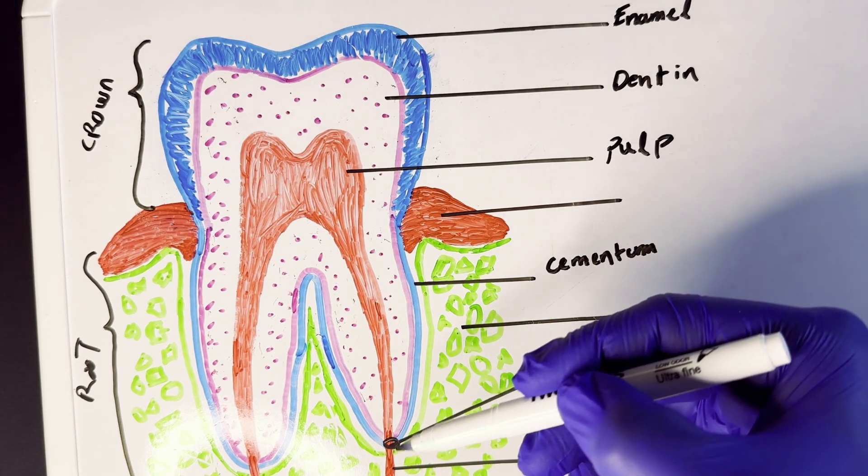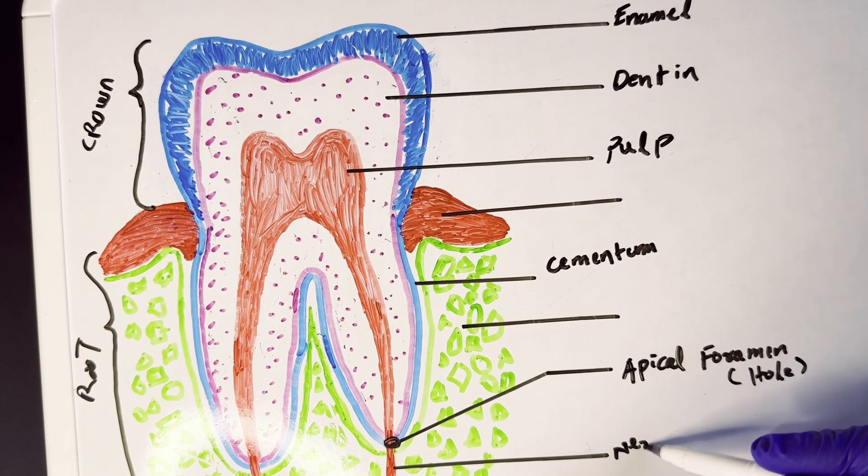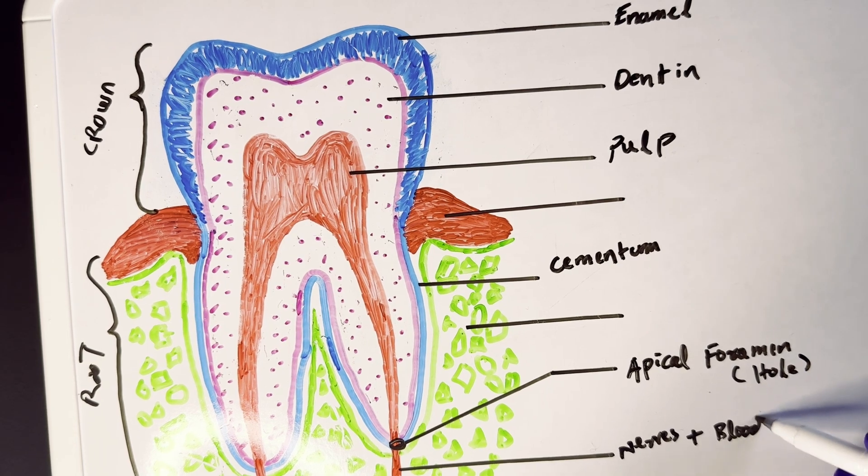And this red structure that I've drawn here simply represents the nerves plus small blood vessels. They take blood to and from the tooth.